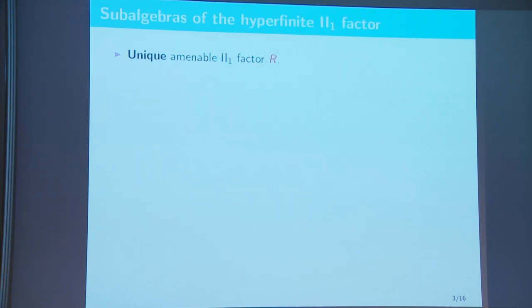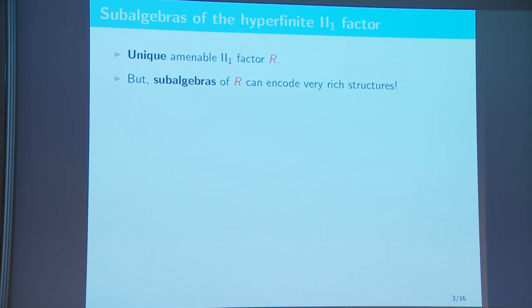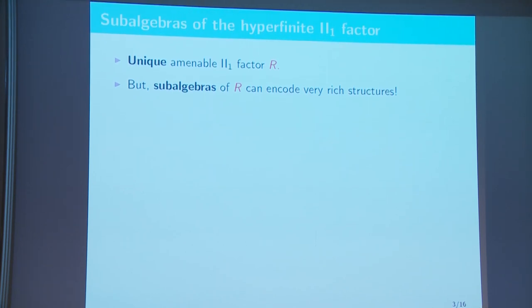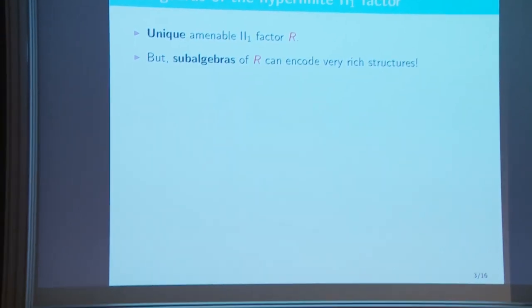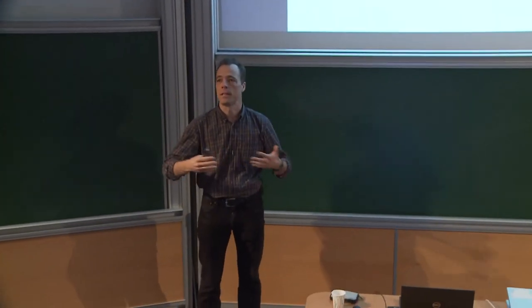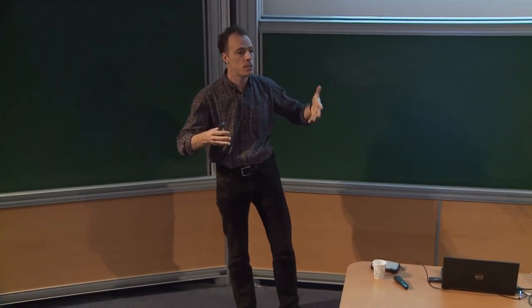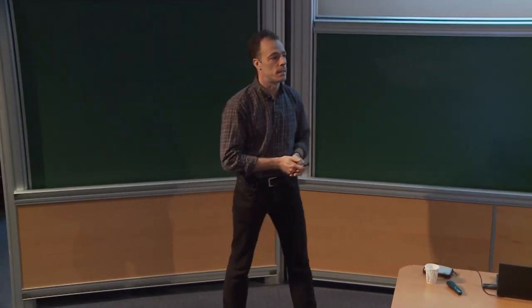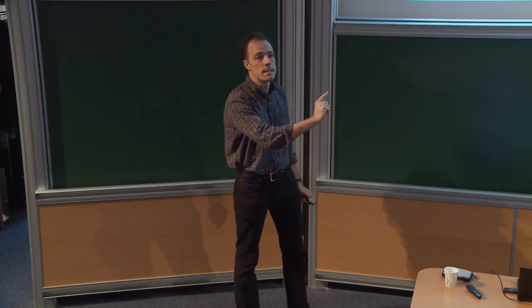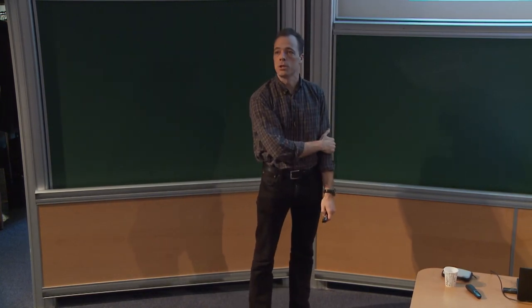From the point of view of classification, there is nothing more to say — there is just the unique amenable type II₁ factor. But when you consider sub-algebras of the hyperfinite II₁ factor, there is already a very first remark to make: sub-algebras inherit amenability. So up to isomorphisms the sub-algebras could be finite-dimensional with some center, but essentially it's again just the same algebra that can arise. However, the way they sit inside can encode extremely rich structures.